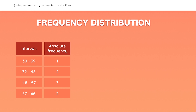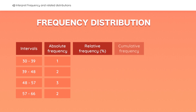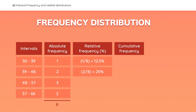Two other important factors are relative frequency and cumulative frequency. The relative frequency is always in percentage terms. There are eight observations in total, so one-eighth, or 12.5% of the total observations, fall within the first interval. Two-eighths fall within the second interval, and so on.